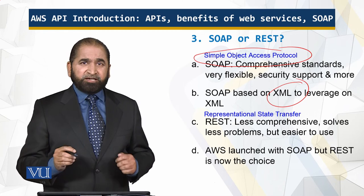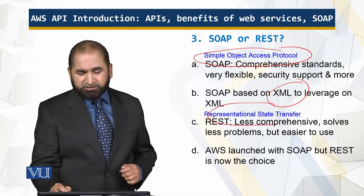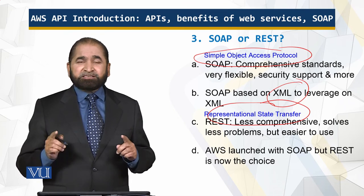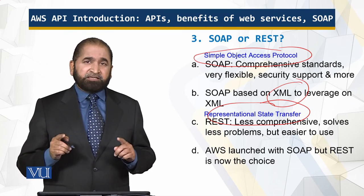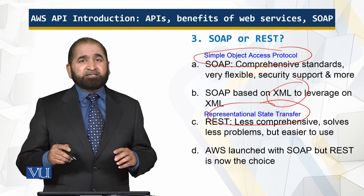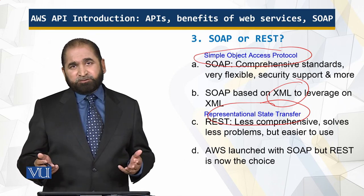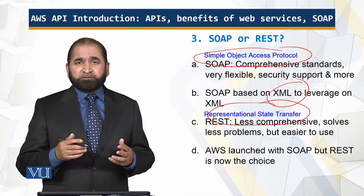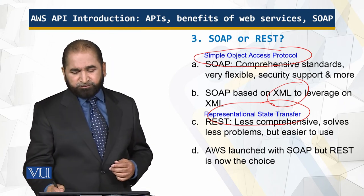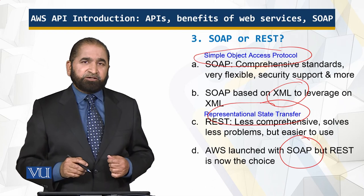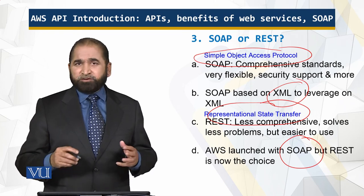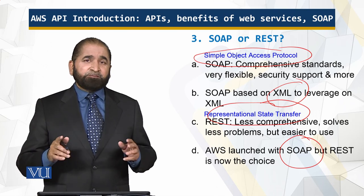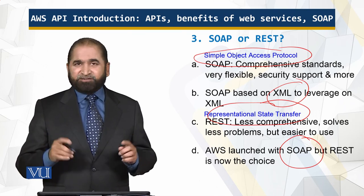There is a PhD student who came up with REST — Representational State Transfer — which is less comprehensive, makes fewer promises, has less functionality, but it serves the purpose. Amazon Web Services started with SOAP but now REST is their choice. So you should be aware of SOAP versus REST in the context of Amazon Web Services and about the Application Programming Interface.